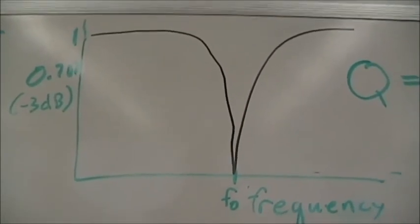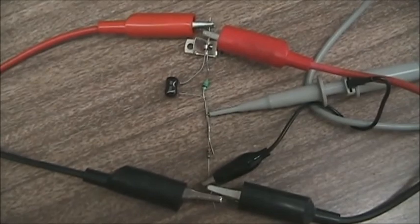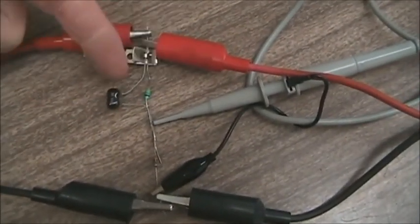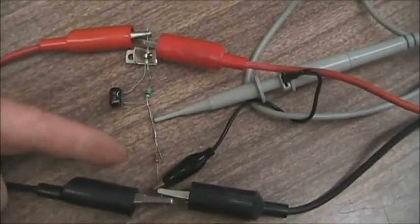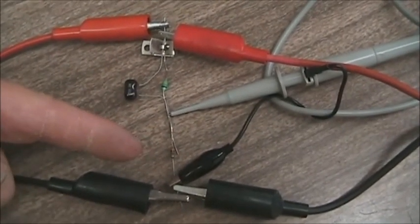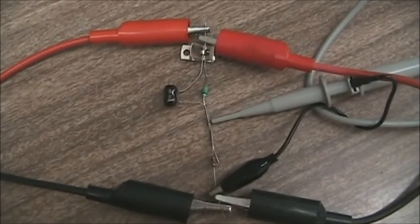So this is the setup in the lab. The C and the L are now in parallel being served by the generator and we're measuring that signal. And then the R value, in this case 300 ohms. And we'll measure that across above and below the resonant frequency.